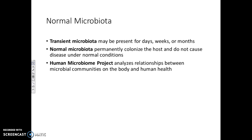One example of an opportunistic pathogen is Staphylococcus aureus. Staph is present in about 30% of people and doesn't cause illness in those people. However, if somebody cuts themselves shaving and develops a large abscess or pustule on their chin, that abrasion to the skin compromised the situation — and Staph then replicates out of control, causing a disease state.